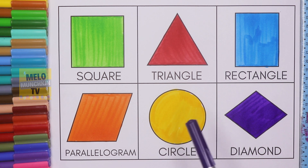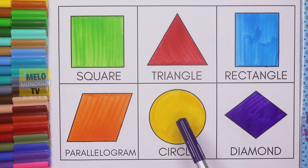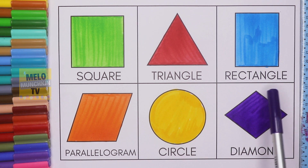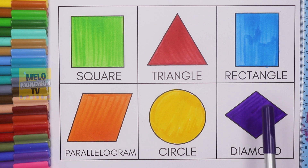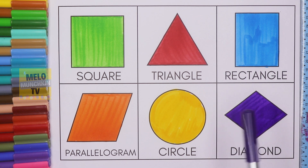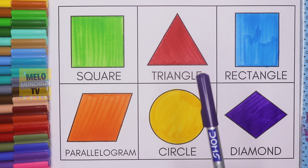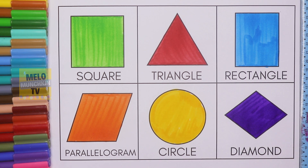This is circle and the color inside is yellow. This is diamond shape and the color inside is purple. So thanks for watching this video, kids. I hope you like it, and if you like it, don't forget to hit thumbs up and share this video with your friends.